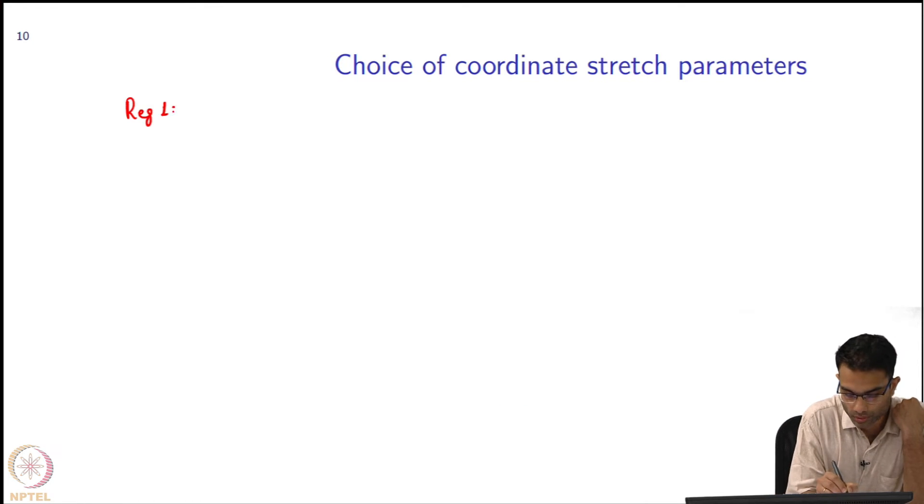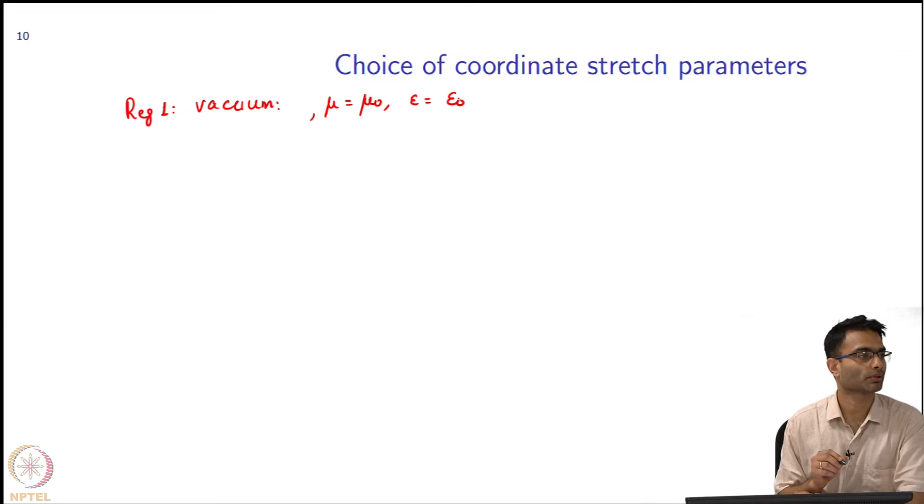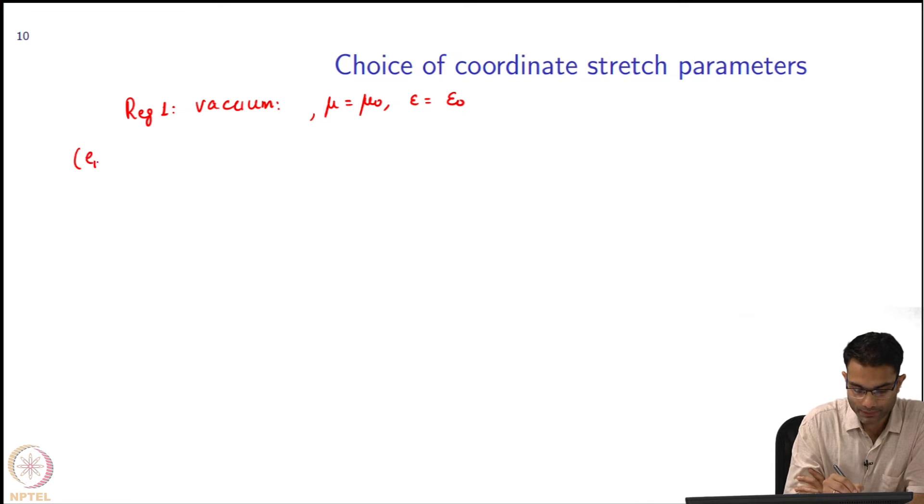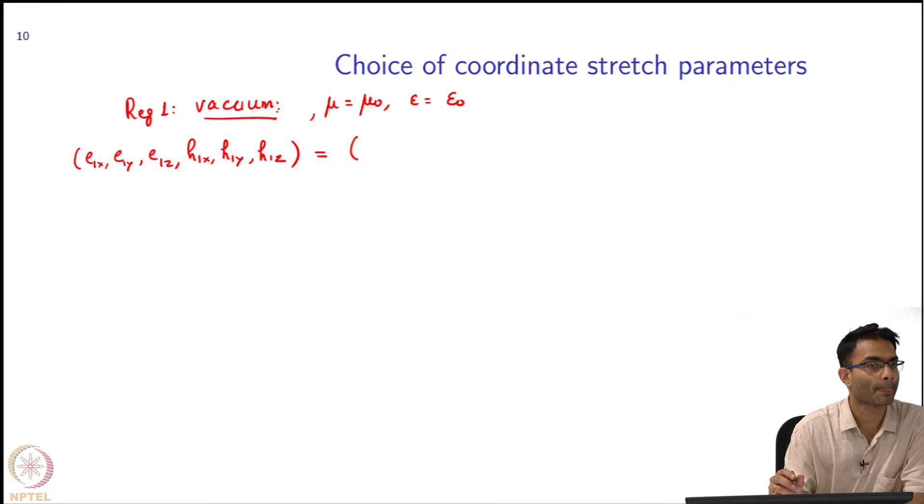Let us write down our choice of stretching parameters. If region 1 is vacuum, what will our mu be? mu naught epsilon naught. And what will I choose my e1x, e1y, e1z, h1x, h1y, h1z? These were the parameters of my coordinate stretch. Remember it is vacuum, how will I get vacuum equal to 1. This is 1, 1, 1, it is vacuum. Everything has to be 1 because I am trying to model a physical medium inside my computational domain.